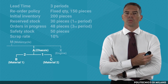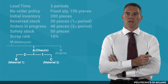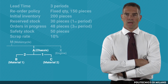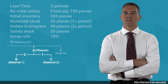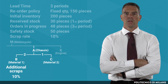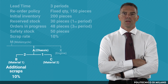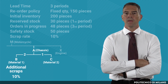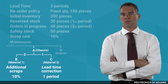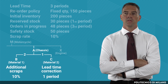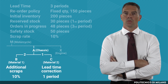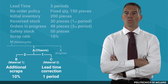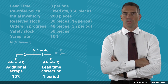We also need information on the relationships between B and A, and C and A. For the B-A relationship there is a coefficient of use as already presented, plus assembly scraps of 10% — meaning 10% of B gets scrapped during assembly. For C, there is a lead time correction of one period: we do not need C at the very beginning of manufacturing A but can wait one more period under our rendezvous policy.